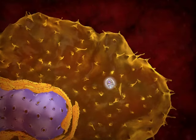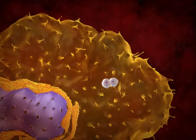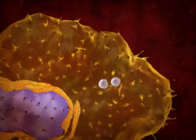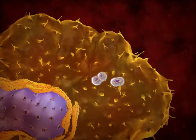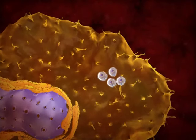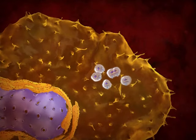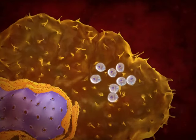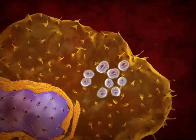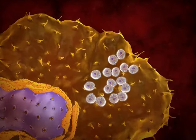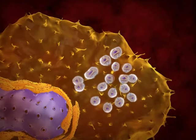The amastigotes are released into the cytoplasm of the host cell and divide multiple times. Observe how many amastigotes are accumulating through the division process. They can occupy the entire cytoplasm of the host cell.